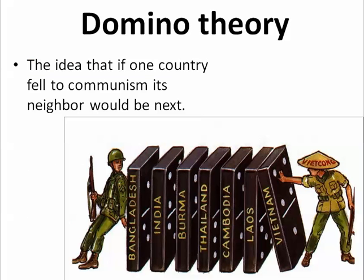Before we do that, let's talk about the domino theory. George Kennan and a few other leaders — Truman, Eisenhower eventually, and then Kennedy and Johnson — start talking about the domino theory. This is the idea that if one country fell to communism, its neighbor would fall to communism. During Vietnam, if Vietnam fell, then Laos, Cambodia, Thailand, Burma, India, Bangladesh — all neighboring countries — would fall as well. The object of containment was to hold these dominoes up and prevent one from falling to communism.